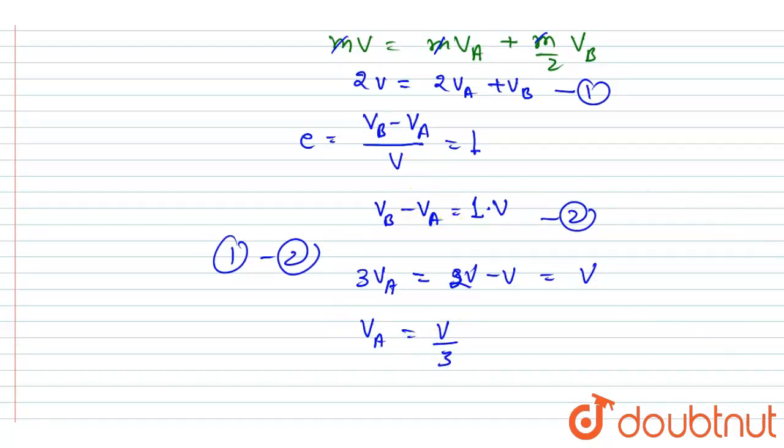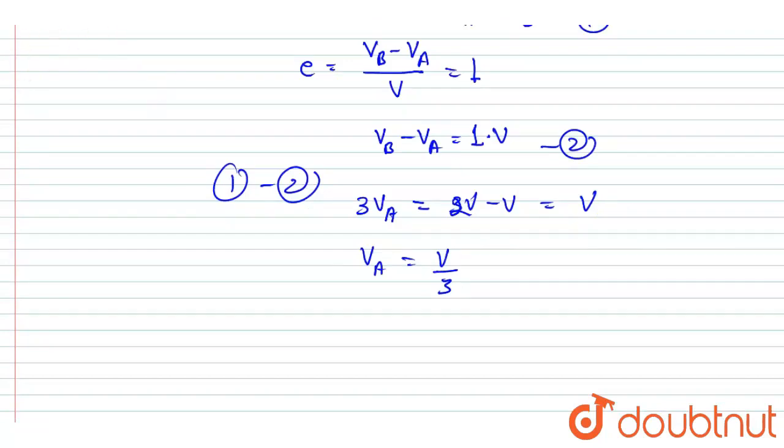So I will write here vB equals - putting the value of vA in equation 2 - so I will write v plus vA equals vB. So v plus v/3 is vB, that is 4v/3.